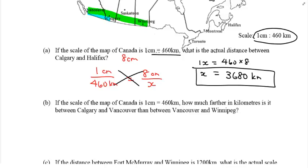So, I got here, Calgary and Vancouver, the distance is 1.5 centimeters, and Vancouver to Winnipeg was 4 centimeters. So, how much farther? You can do this a few different ways. I'll let you try whichever you wish. I'm going to actually calculate the difference between these two measurements.